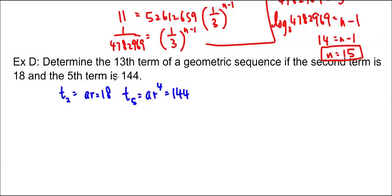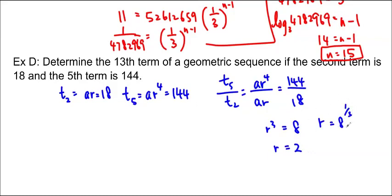We're going to do an elimination here. We're actually going to divide them. So we're going to do T sub 5 divided by T sub 2. That gives us A times R to the 4 over AR equals 144 over 18. And if we divide this, then we'll get R cubed equals 8. 144 divided by 18 is 8. And hopefully you recognize this 8 as 2 cubed, so R is actually equal to 2. Or of course you could do R equals 8 to the 1 third and type it into your calculator. So R equals 2.